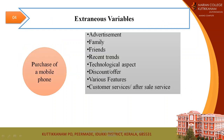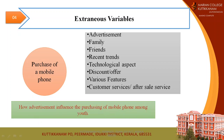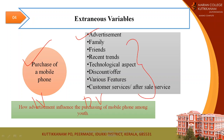Now we move on to the second type of variable: extraneous variable. Suppose you are doing research on the topic 'how advertisement influences the purchasing behavior of mobile phones among youth.' Here, advertisement acts as the independent variable and your purchasing decision acts as the dependent variable. Since we are only considering these two variables, the other factors — such as family, friends, and trends — are not considered. These other factors are what we call extraneous variables.